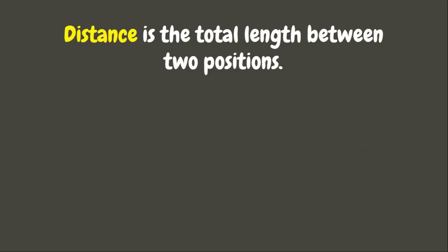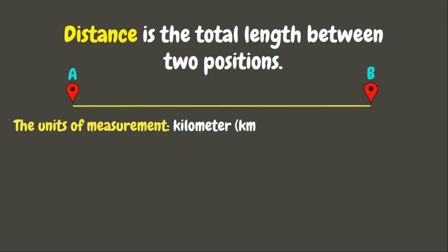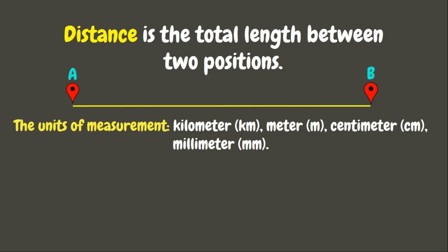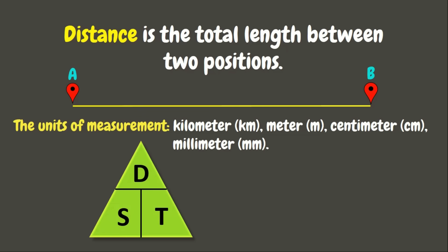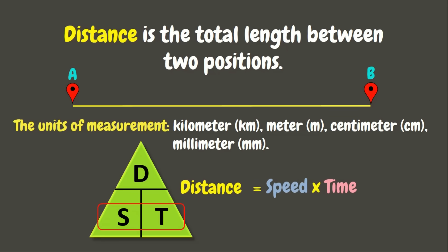Distance is the total length between two positions. The units of measurement for distance can be kilometers, meter, centimeter, or millimeter. Now, to solve for the distance, we just simply need to multiply the speed and the time. Now, let's go back and solve our problem.